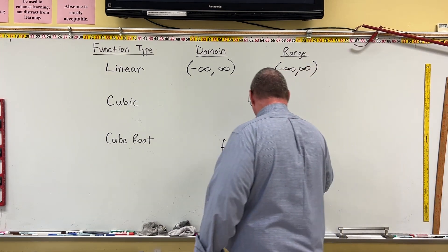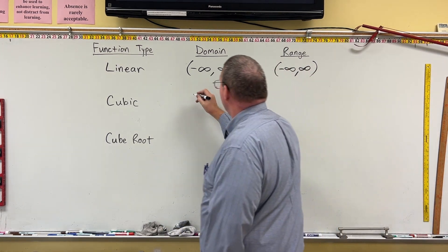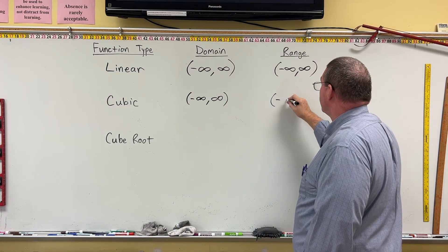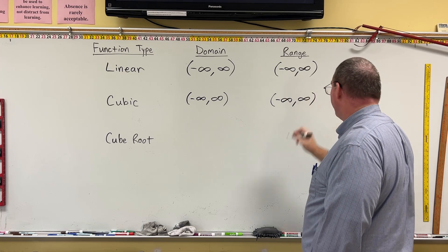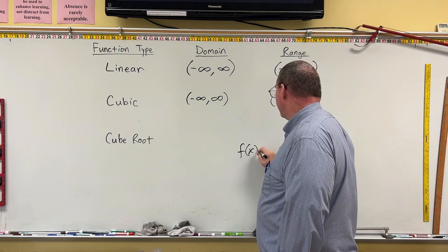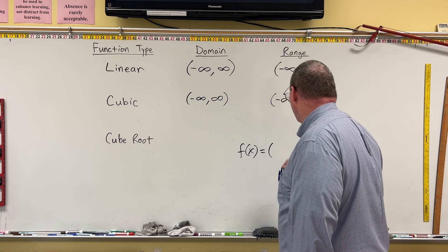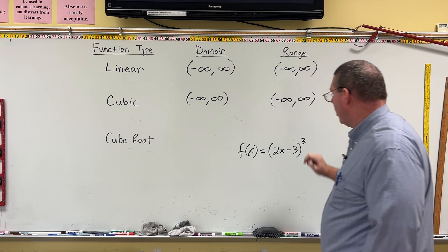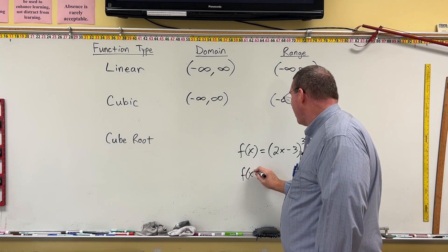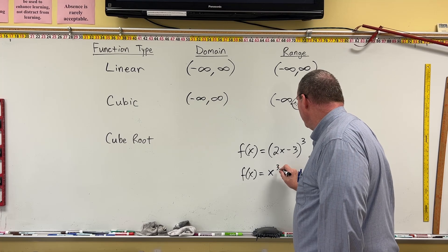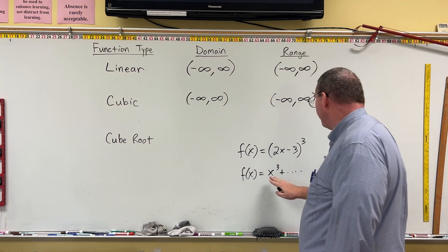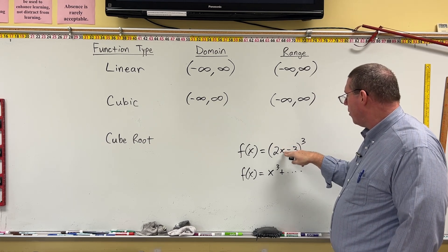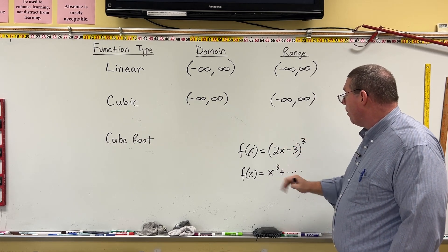Now let's do cubic. The domain and range are the same — negative infinity to positive infinity. A cubic function might look like f of x equals 2x minus 3, all cubed. It might also look like f of x equals x cubed plus something else. If it starts with x cubed, or if it's a linear expression in parentheses raised to the third power, these are both cubic functions.